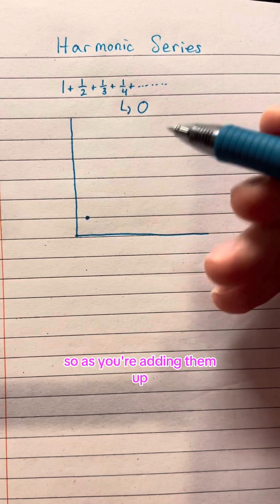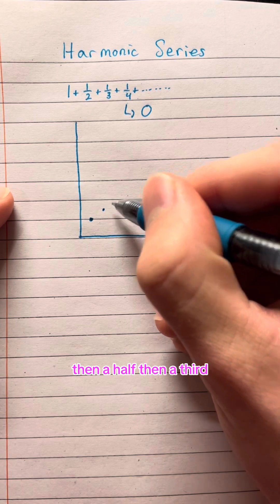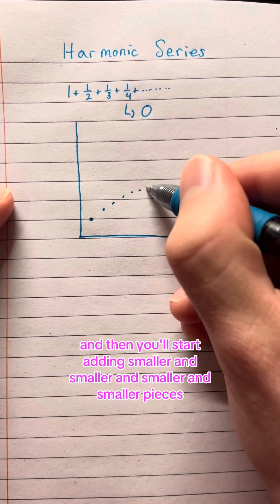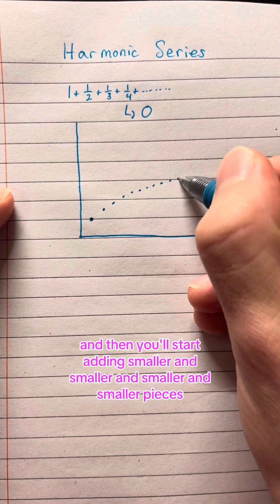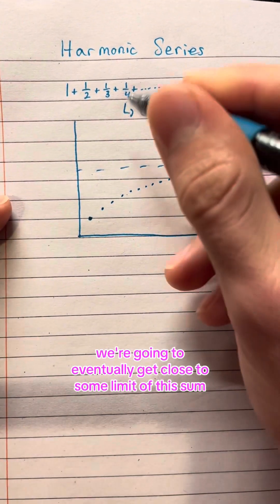So as you're adding them up, you might think that they'll approach some limit. So you'll start off with adding one, then a half, then a third, then a fourth, and then you'll start adding smaller and smaller pieces, and we're going to eventually get close to some limit of this sum.